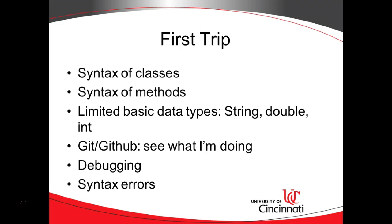A quick look at syntax of methods and classes, just so we know where things belong. Next, we're going to take a limited look at data types — three data types that will cover the vast majority of what we need on our first ride on the carousel. That is: a string, which is character data of any kind enclosed in double quotes; the double data type, which is where we can have fractional data or data that includes a decimal point; and the int data type, which is purely for whole numbers. In Java there are several more data types, but let's not worry about them on our first trip — thinking about them now would just confuse things.